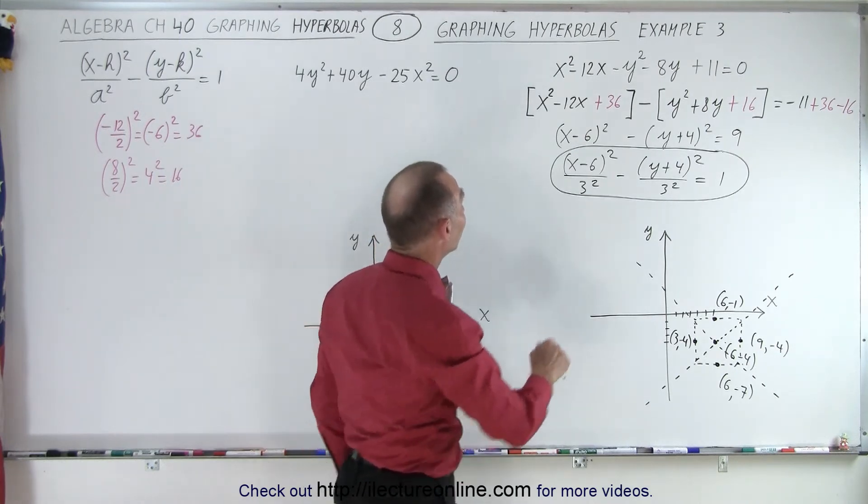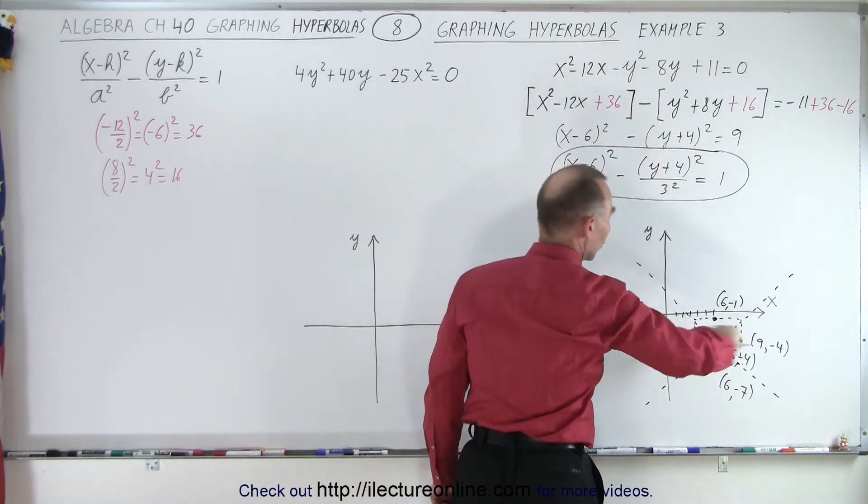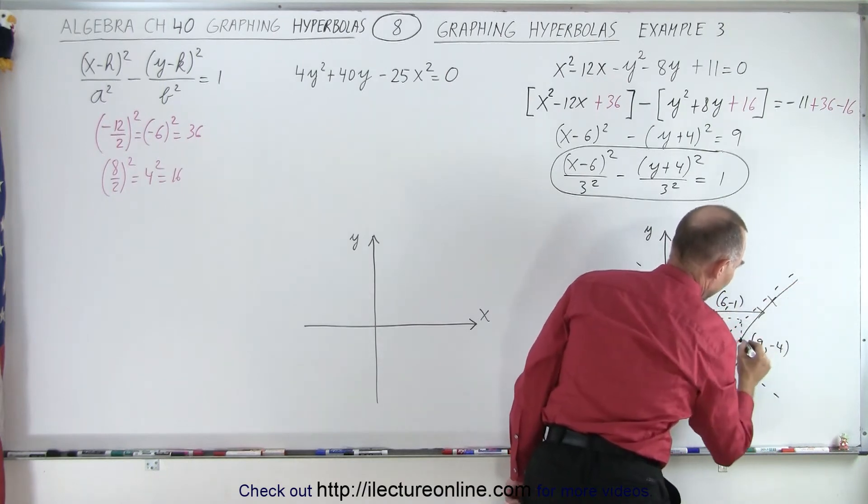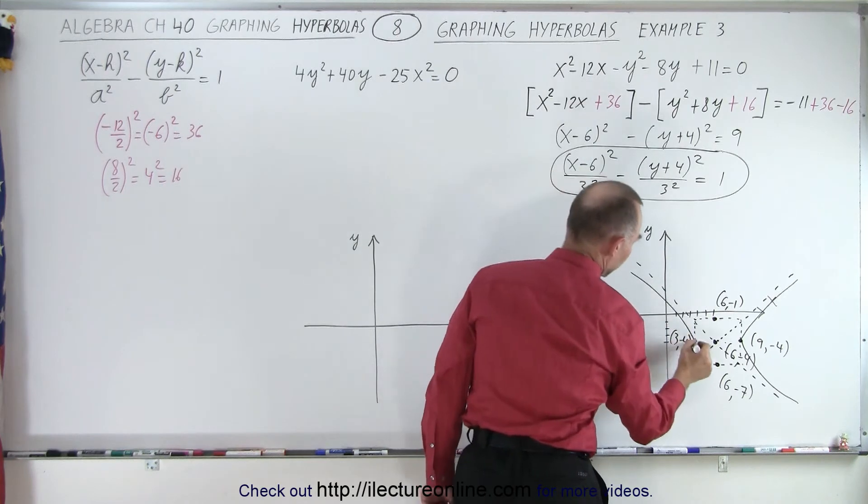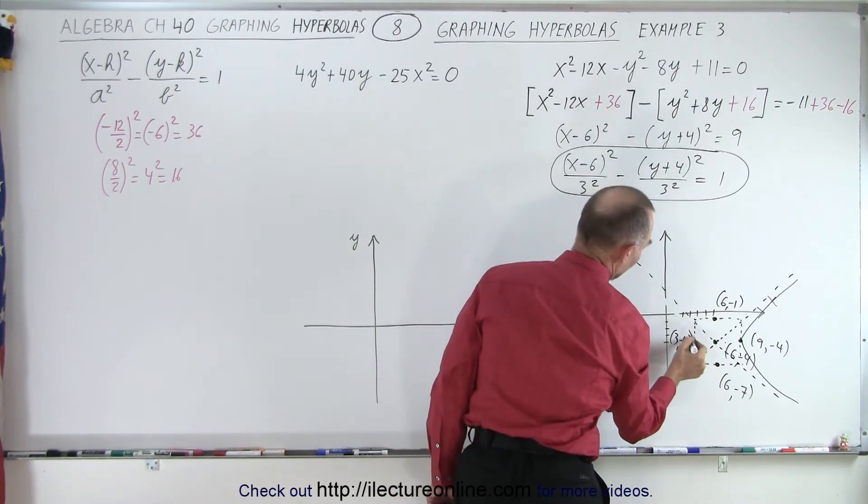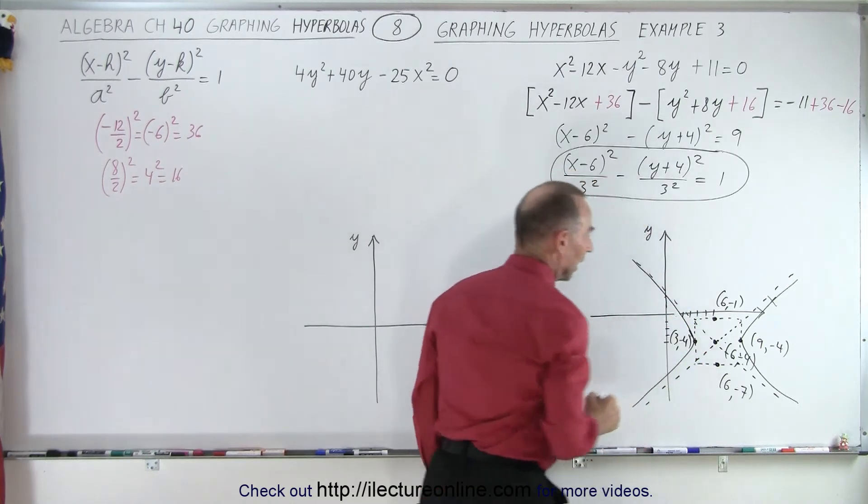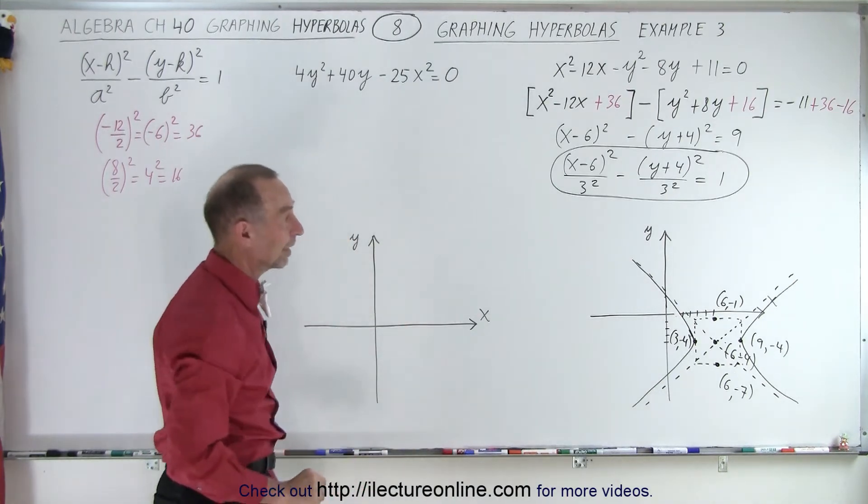Now, which way will open? Notice that the x term is positive. The y term is negative, which means it's going to open up sideways, which means our hyperbola will look like this. And that is how we draw hyperbola if we're given an equation like this.